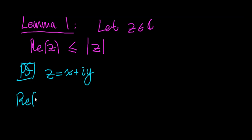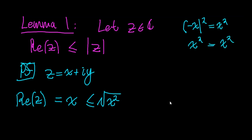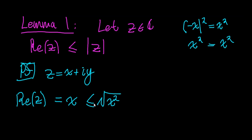The real part of z is equal to x, which is less than or equal to the square root of x squared. The reason is that the square root of x² asks for what number, when squared, gives x². There are two such numbers: negative x and positive x. So when x is negative this inequality is strict, and when x is zero or positive, this inequality is actually an equality.